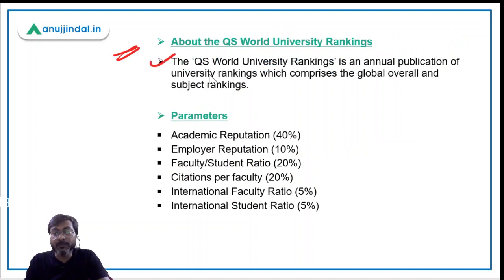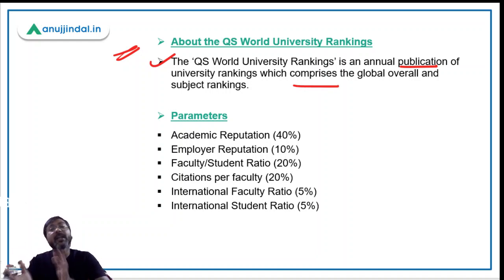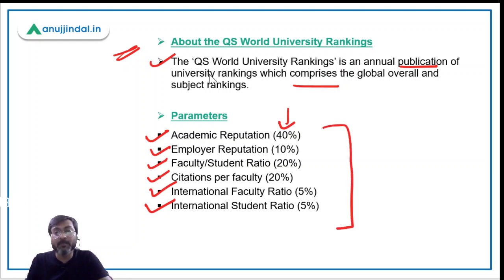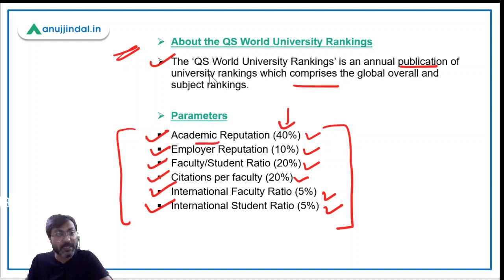The QS World University Rankings is an annual publication comprising overall global and subject rankings. It is based on six parameters: academic reputation (40% weightage), employer reputation (10%), faculty-student ratio (20%), citations per faculty (20%), international faculty ratio (5%), and international student ratio (5%). You should remember all six parameter names; the exact weightages are less critical.